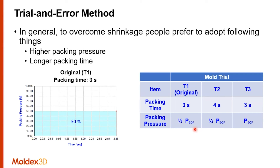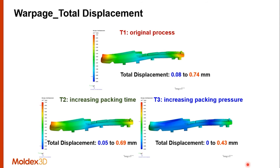Then as part of the mold trial for T2 and T3, it was decided to increase the pack time for T2 while keeping the pack pressure the same. While for T3, the pack time was left the same and the pack pressure was doubled. With this approach, we want to see what it does to the overall warpage.